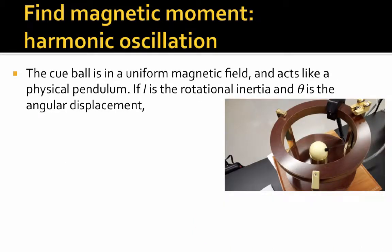The second technique is to find the magnetic moment using harmonic oscillations. What we're going to do is have our little cue ball here just oscillate back and forth. It acts like a physical pendulum in this field. And since the torque is equal to I alpha, and the torque on this particular magnetic moment is equal to μ cross B, or minus μB times θ, using the small angle approximation.